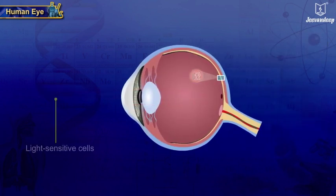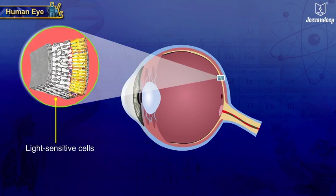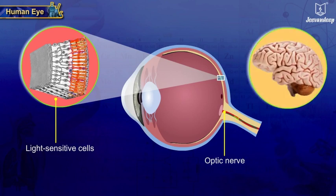The light-sensitive cells get activated on illumination and electrical signals are generated. These signals are passed by the optic nerves to the brain. The brain interprets these signals and processes the information in such a way that we perceive the object as it is.